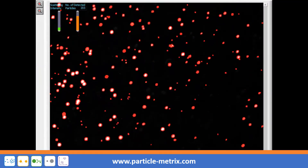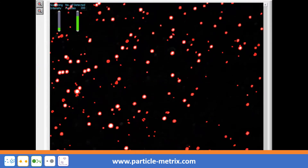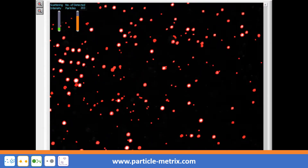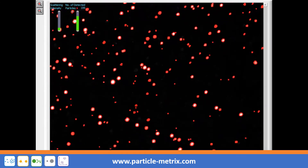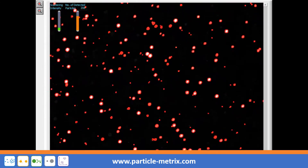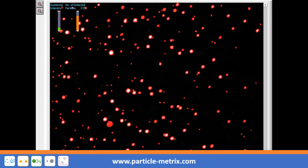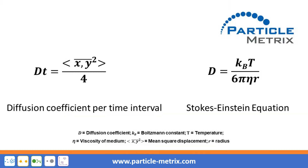The particle size in a sample is determined by tracking each individual particle while recording a video as they move according to Brownian motion. Since the ZetaView instrument detects, localizes, and tracks each particle in the field of view, the software can quantify the average mean square displacement per time interval and determines a diffusion coefficient for each individual particle. The diffusion coefficient of each individual particle is then taken into the Stokes-Einstein equation.